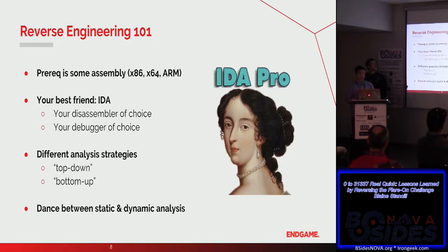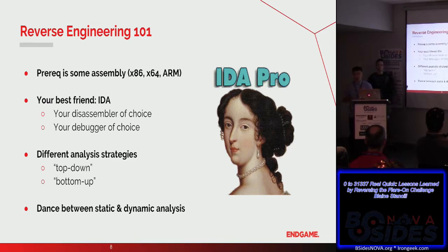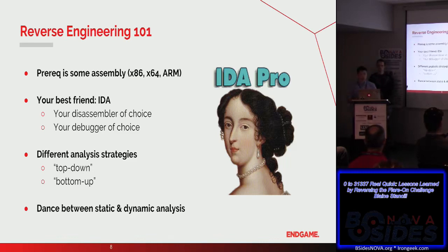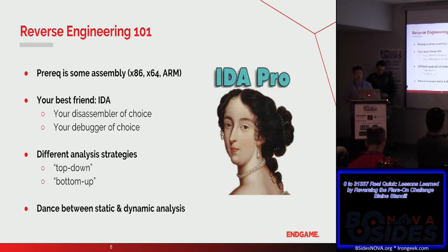When you're reverse engineering executable binaries for FLARE or CTF-like challenges, you won't be given source code. Because of this, it's important to be able to read x86, x64, and ARM assembly, as the binary you'll be analyzing will most likely have been built for one of these three architectures. You need a disassembler, and Blaine and I recommend using a program called IDA Pro, which comes with a disassembler as well as a debugger. If you purchase the Hex-Rays option, it also comes with a decompiler, which for the most part works pretty well, though sometimes it doesn't decompile correctly.